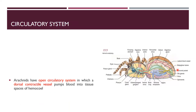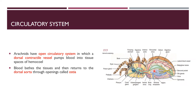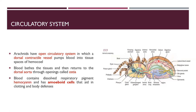The circulatory system is open type with no blood vessels. A dorsal vessel pumps blood into the hemocoel body cavities. Blood returns to the dorsal vessel through openings called ostia. Blood contains a dissolved respiratory pigment called hemocyanin, which gives it a blue color. Amoeboid cells are present that aid in clotting and body defense.